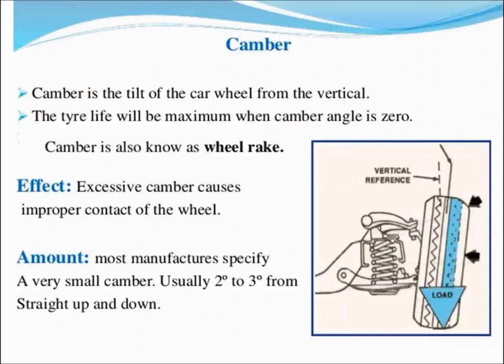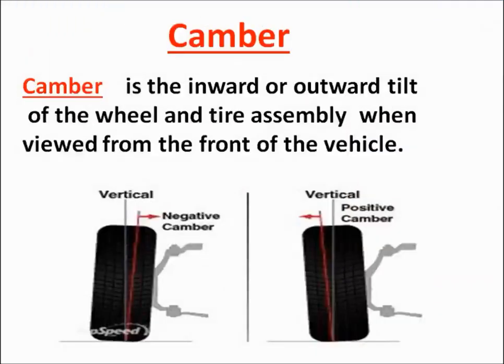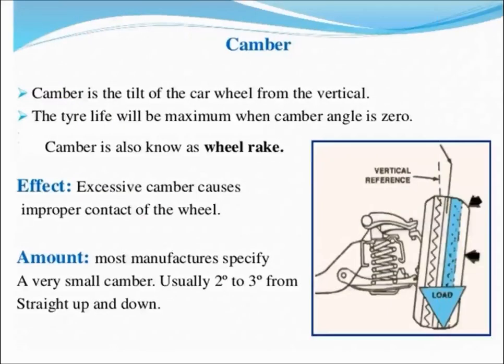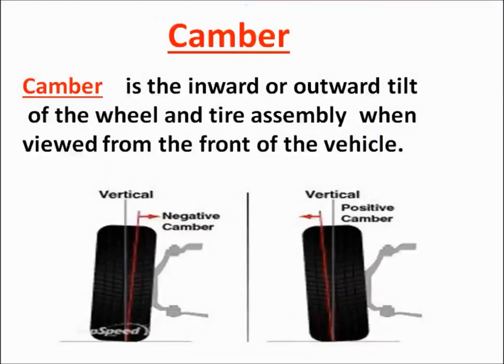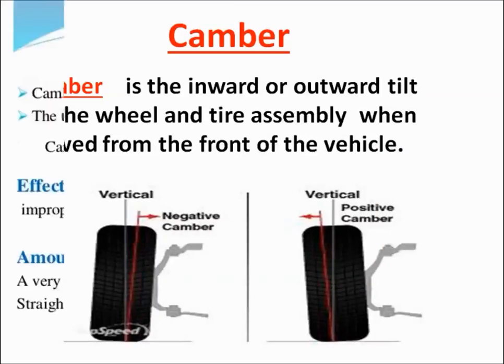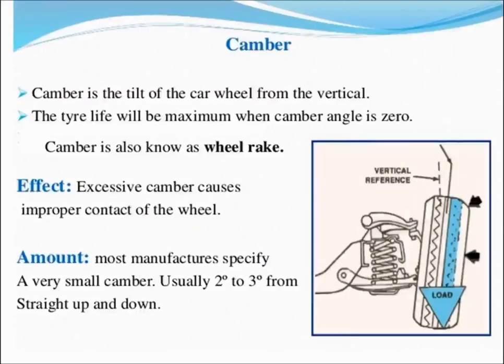Camber is the tilt of the car wheel from the vertical. However, it is assumed that the tire life will be maximum or more when the camber angle is zero. Camber or camber angle is also known as wheel rake. Excessive camber can cause improper contact of the wheel with the road. Most manufacturers specify a very small camber, usually 2 to 3 degrees from straight up or vertical.